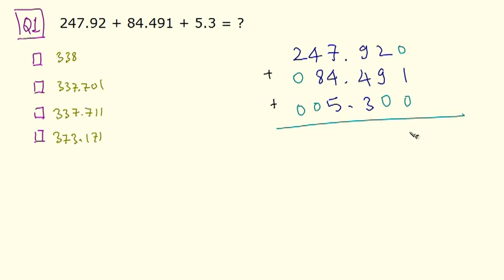So, 1 plus 0 plus 0 is 1. 9 plus 2 is 11, so I have 1 carry here. 9 plus 1 is 10. 4 plus 3 is 7. So 10 plus 7 is 17. So here is 7, 1 carry. 7 plus 1 is 8, plus 4 is 12, plus 5 is 17.